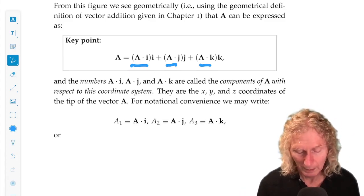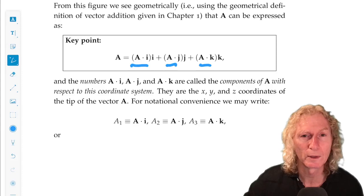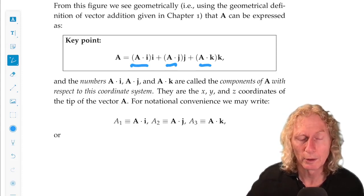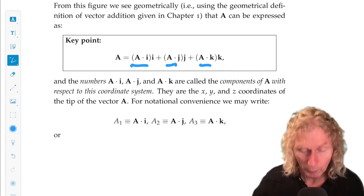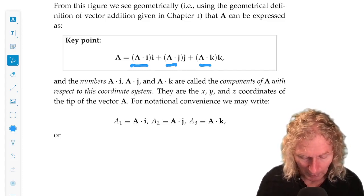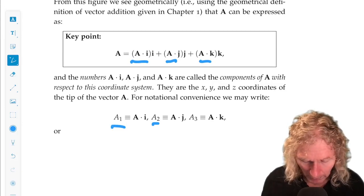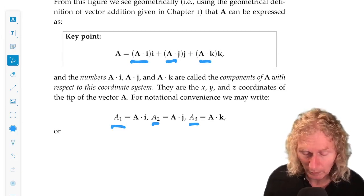The scalars that multiply each of the unit vectors are referred to as the components of the vector a. So components are numbers, and they're just the numbers that multiply each unit vector, defining the three directions for this coordinate system, so we may want to denote them as a1, a2, or a3, for example.